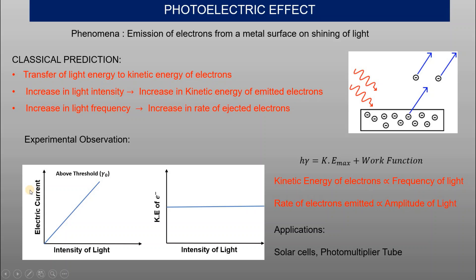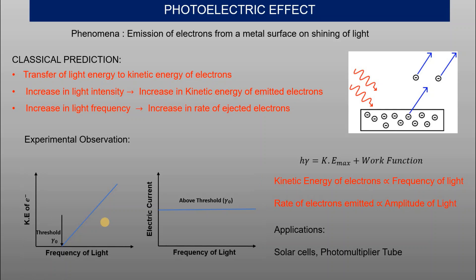If you increase light intensity, you increase the number of photons. More photons mean more electrons emitted, so the photocurrent increases proportionally. This proportionality is explained by quantization. Einstein's theory, using quantization in the photoelectric effect, answers all the experimental outcomes. The photoelectric effect is used today in solar cells and photomultiplier tubes.